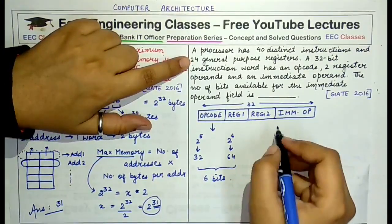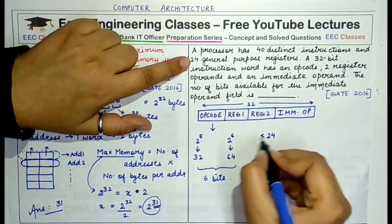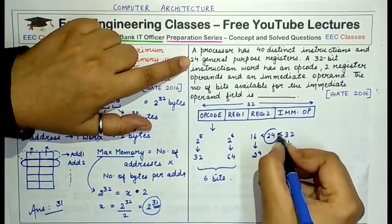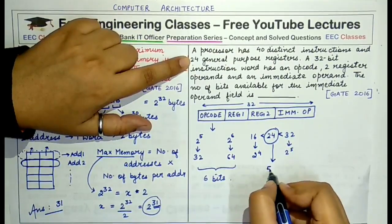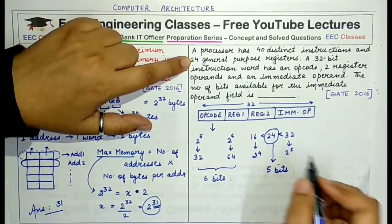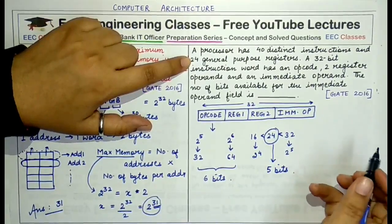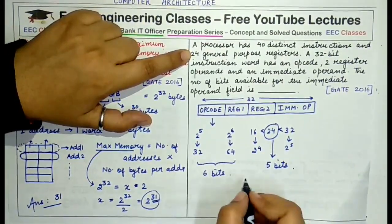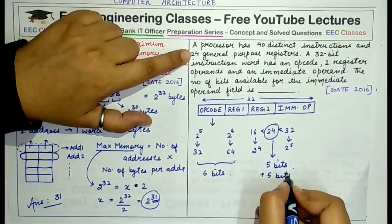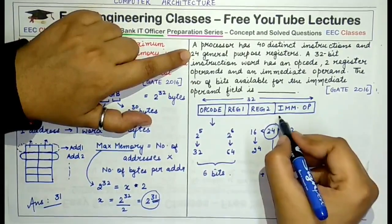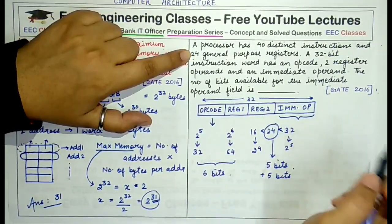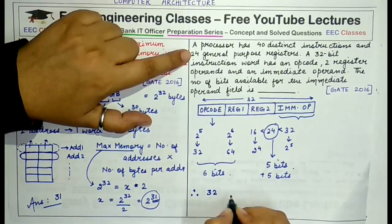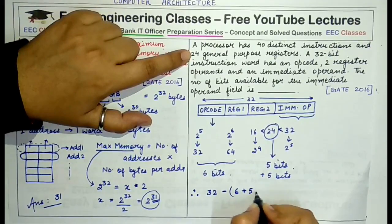Similarly, each register field must represent all 24 possible registers. Since 24 lies between 16 (2 raised to power 4) and 32 (2 raised to power 5), we use 5 bits each for the register fields. 5 bits can represent 32 combinations — 24 of them represent the general purpose registers. So register operand 1 takes 5 bits and register operand 2 takes 5 bits. The remaining bits out of 32 are allocated to the immediate operand field.